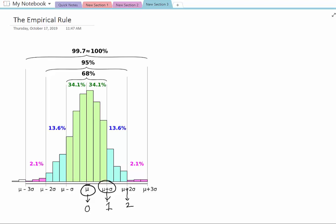This is two plus one is three, and we can do the same way to the left side: negative one, negative two for the z-score, negative three.